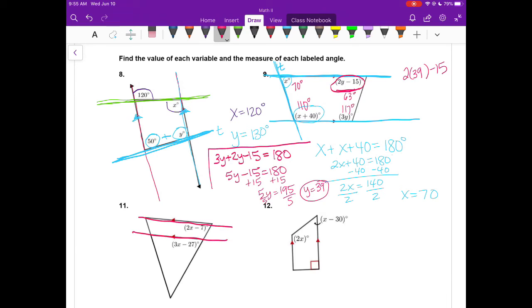On number 11, we have two parallel lines cut by a transversal. So these two angles are corresponding. So they are going to be equal. So 2X minus 7 is going to equal 3X minus 27. Let's minus 2X from both sides. 3X minus 2X gives us X. And then I'm going to rewrite the negative 7 on the left. 2X minus 2X cancel to be 0. And I'm just going to rewrite the negative 27. I add 27 to both sides. X is going to equal 20.